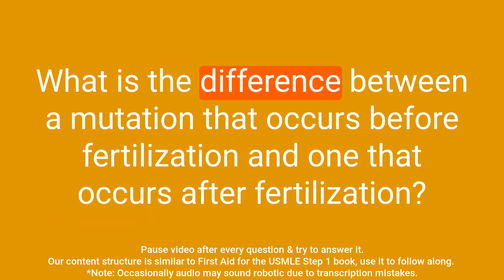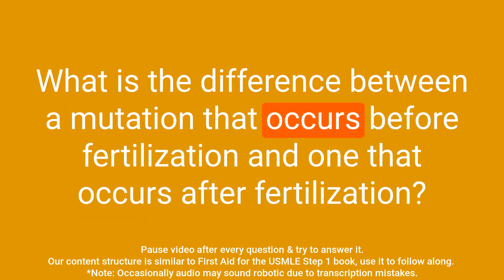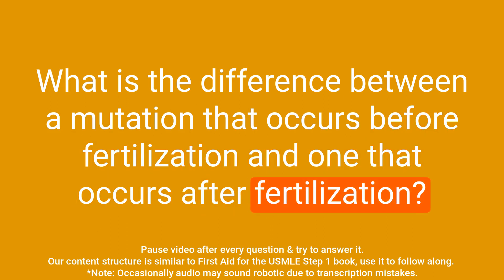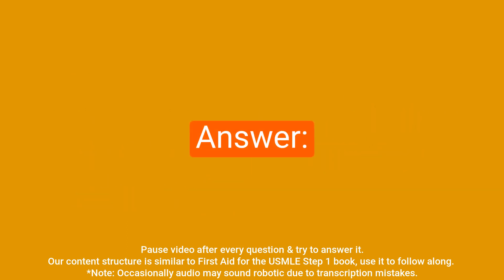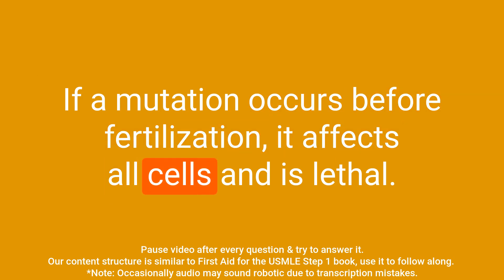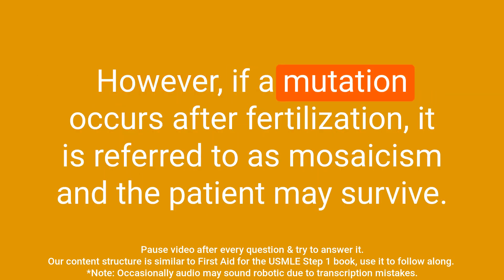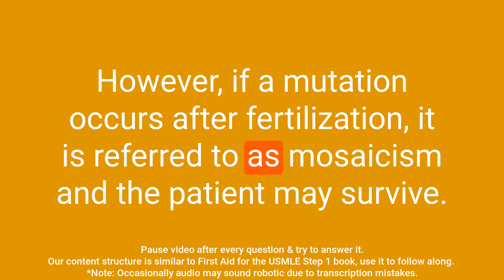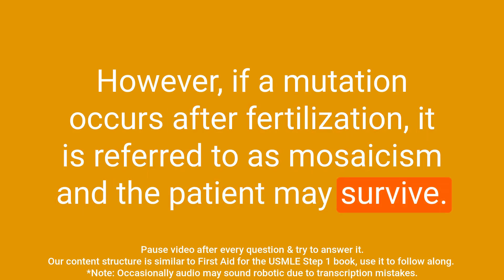Question: What is the difference between a mutation that occurs before fertilization and one that occurs after fertilization? Answer: If a mutation occurs before fertilization, it affects all cells and is lethal. However, if a mutation occurs after fertilization, it is referred to as mosaicism and the patient may survive.